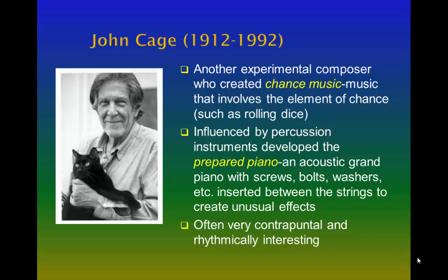Cage was also interested in percussive sounds and was one of the first to write for percussion ensemble. He also developed the prepared piano: an acoustic grand piano with various objects placed in between the strings — screws, bolts, spoons, etc. — used to change the vibrating properties of the strings. When a key was depressed, unusual percussive sounds would result.